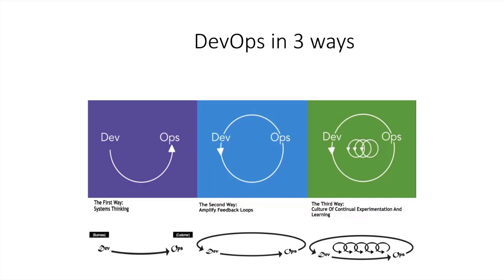The next way is amplifying feedback loops. You should get lots of feedback between the developer and operations team so they can improve their process — we will see multiple ways on the next slide. The third way is continuous learning and experimentation. You should do lots of experimentation; that is where innovation and creativity come in. Not always will the first attempt succeed — there will be multiple failures, but failure is a stepping stone of success.